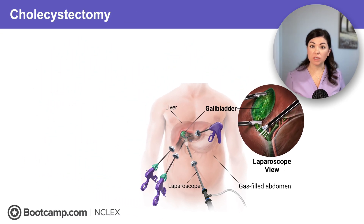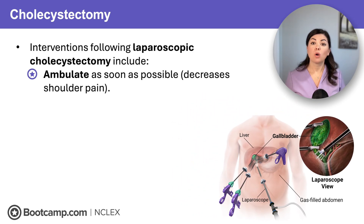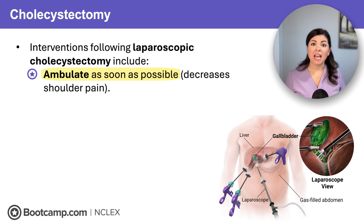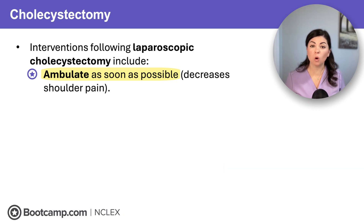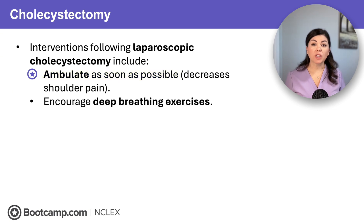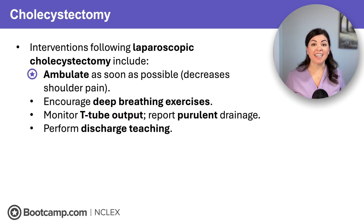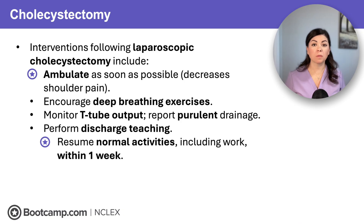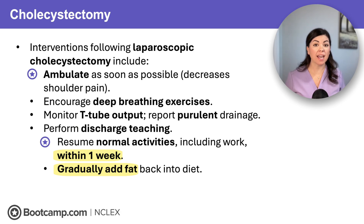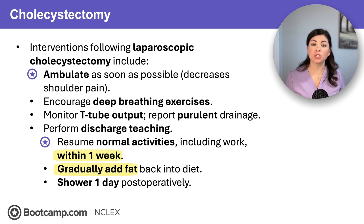After a laparoscopic cholecystectomy, ambulate the client as soon as possible. This relieves shoulder pain caused by trapped CO2 gas used to inflate the abdomen during surgery — that CO2 irritates the phrenic nerve and causes severe right shoulder pain. Walking helps the body absorb and expel the gas more quickly. Encourage deep breathing exercises to prevent atelectasis, and monitor T-tube output closely, reporting any purulent drainage. For discharge, clients should resume normal activity such as work within one week, gradually reintroduce fats to the diet as tolerated, and can typically shower as soon as one day postoperatively.